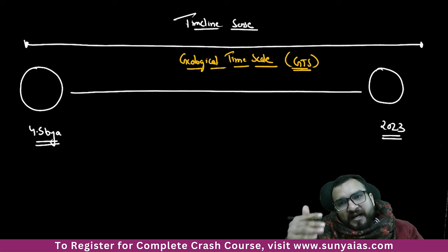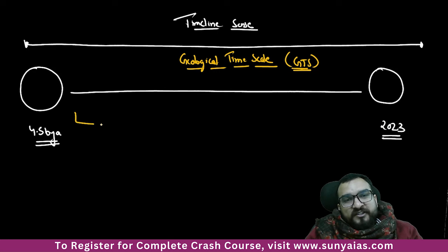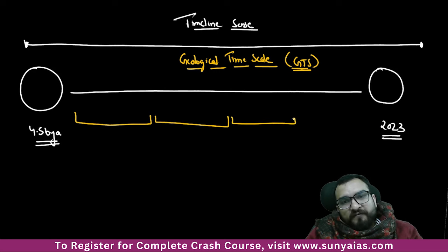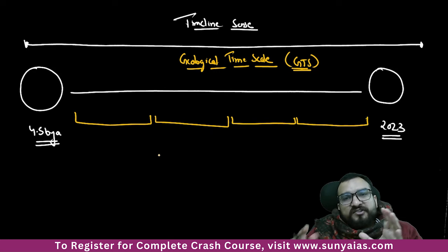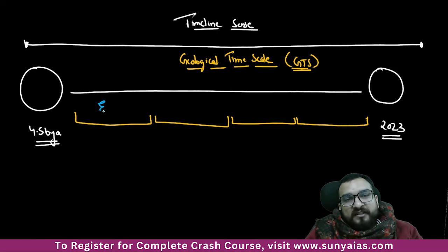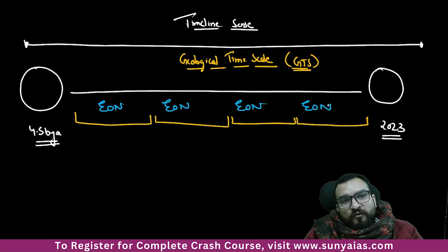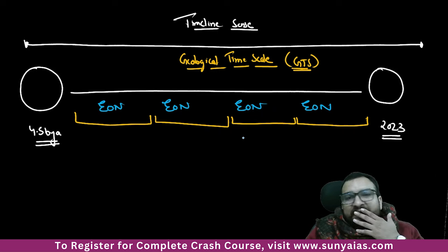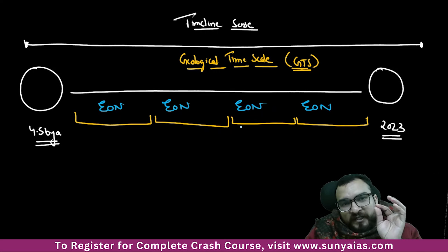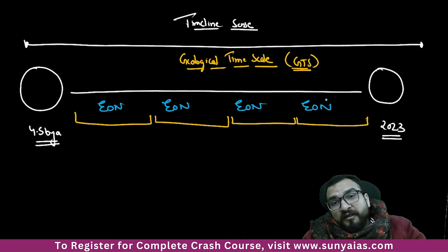This geological time scale divides all of history into certain major chunks — larger units. These larger units are known as Eons. This whole history from 4.5 billion years ago to 2023 is divided into certain eons. You should at least be in a position to tell me in which eon you are currently living.